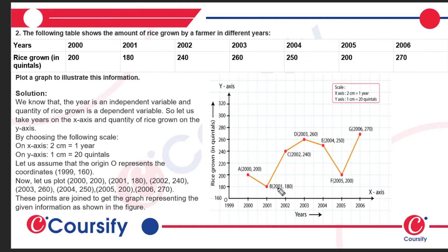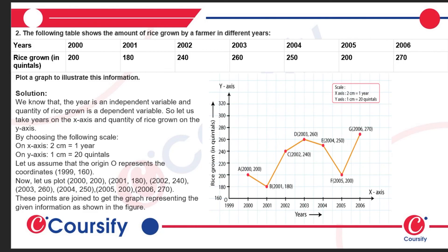We access 2004 on the X-axis and 250 on the Y-axis to plot that point. The next point is (2006, 270) — we access 2006 on the X-axis and 270 on the Y-axis. All seven points are then connected to each other, and we get the line graph. Now moving to the next question of this exercise.